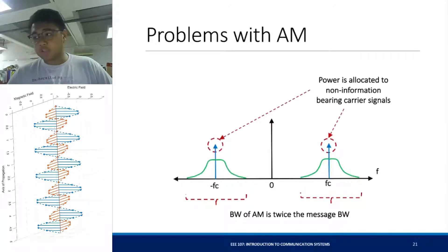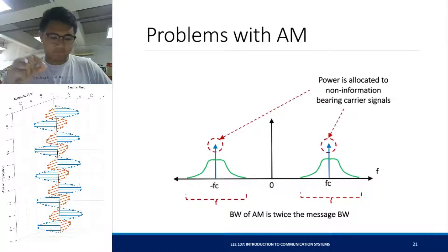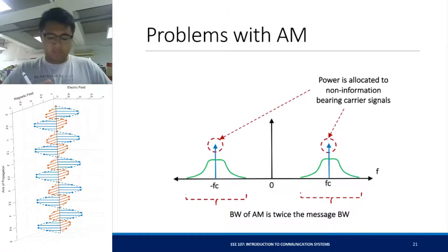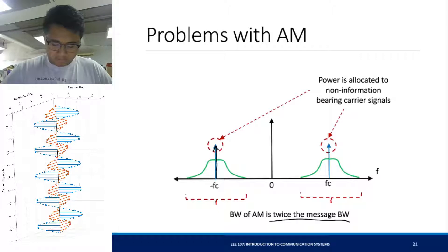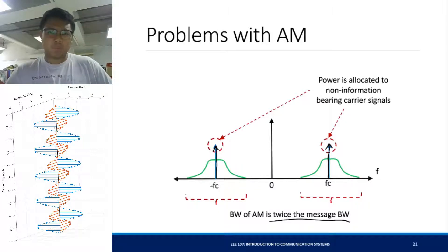There are other problems with this communication scheme. However, it may be easy to demodulate. We're transmitting a signal that has no information, but we have allocated some power to it. Aside from the bandwidth of the AM wave being twice the message bandwidth, there is power allocated to your carrier wave, and we don't get any information at all from this carrier wave. The trade-off is we get a relatively simple demodulation scheme, but it could be wasteful depending on the application.